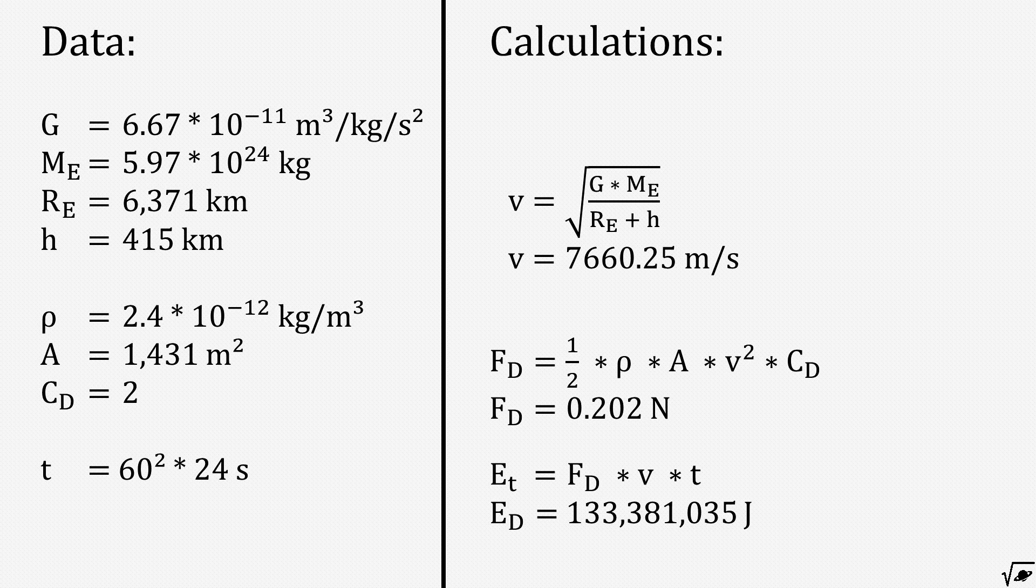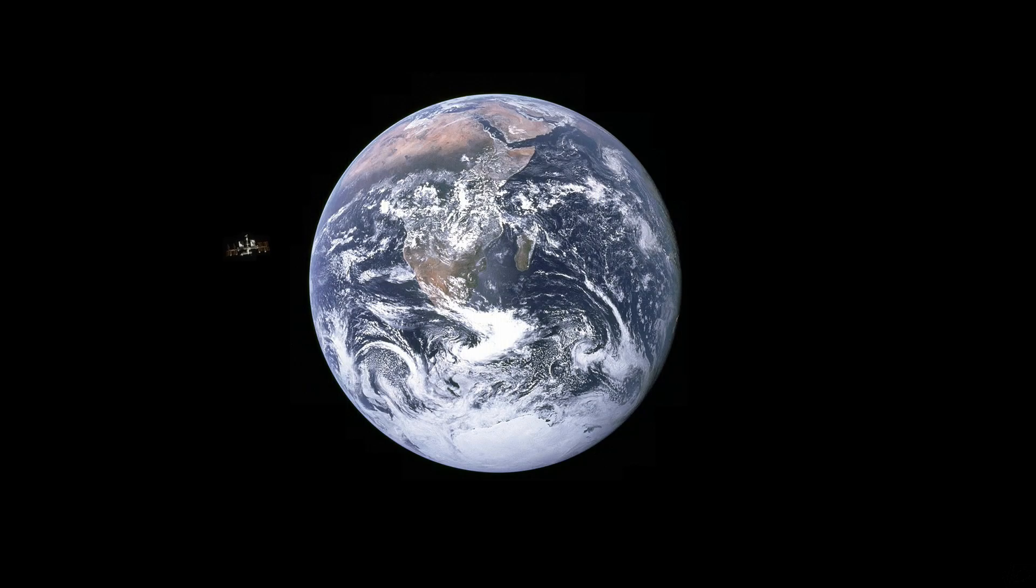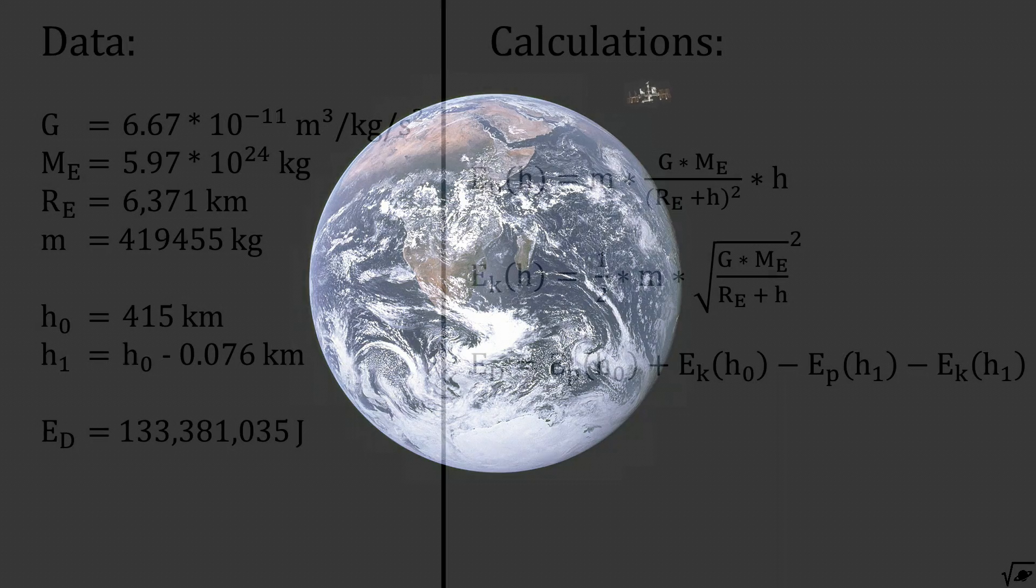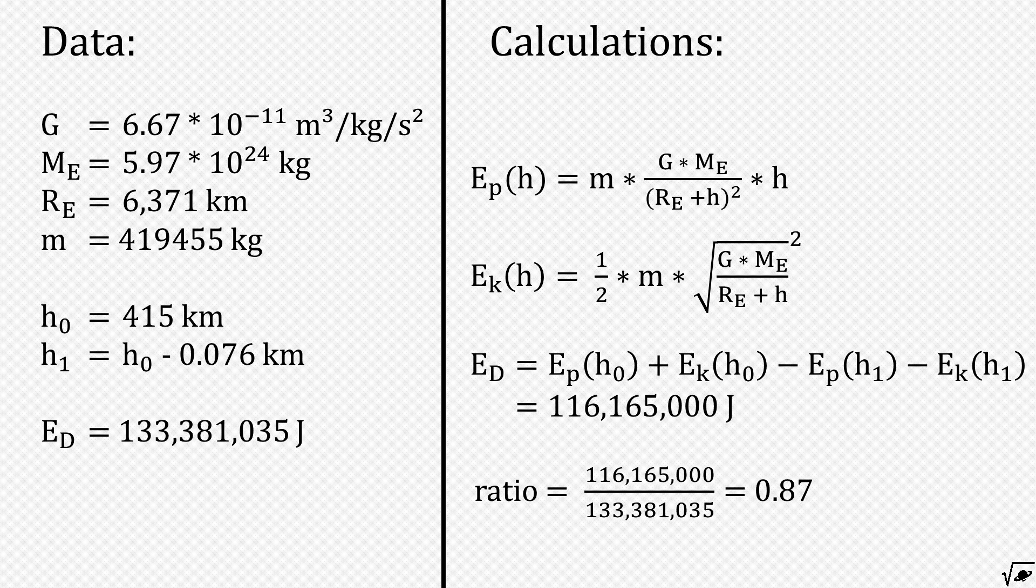Now the question is, does this calculated value match the observed decrease of height? If you would assume that the ISS is making perfect circles around the Earth, which is not entirely the case but anyway, we can calculate the loss of energy by looking at these three equations. This results in a loss of 116 megajoules per day, which is in the margin of error we could expect.